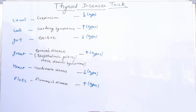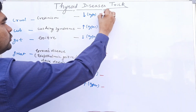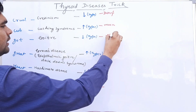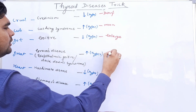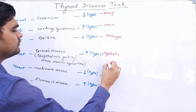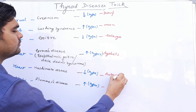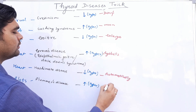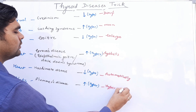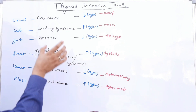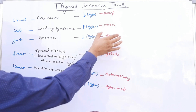Now we will talk about the characteristics of the diseases. What are the characteristics related to these diseases? The trick is: dwarf moon enlarges eyeballs automatically hyper mode. This trick covers the characteristics, while the previous trick covered the disease names.